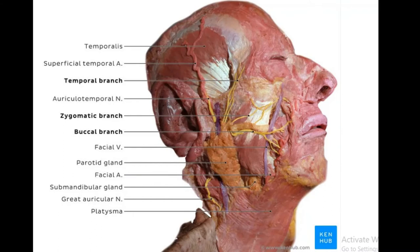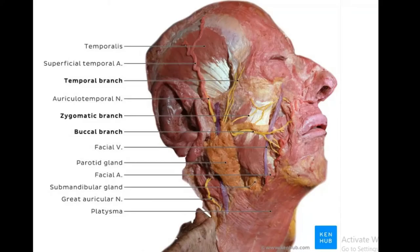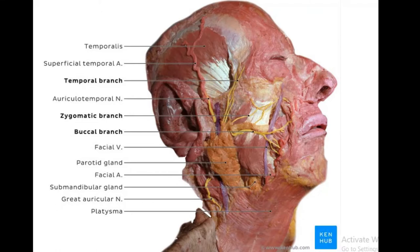Welcome back to the DNN Medical Series. Today we're jumping into anatomy — specifically the parotid gland, which is a salivary gland. We have three major salivary glands: the parotid gland, the submandibular gland, and the sublingual glands. We're going to focus mainly on the biggest one, the parotid gland, covering its features, relationships, nerve supply, and some applied anatomy.